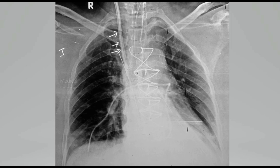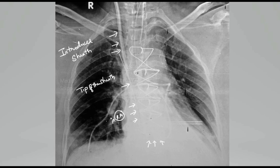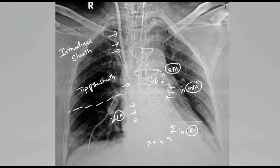This is the introducer sheath through which the PA catheter is inserted. The PA catheter passes through the right atrium, then the right ventricle, and now traverses through the main pulmonary artery, entering the right pulmonary artery. The PA catheter should be lying in one of the main branch pulmonary arteries.